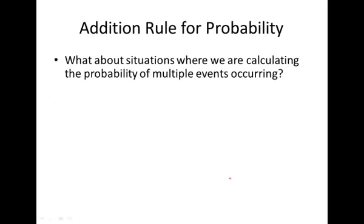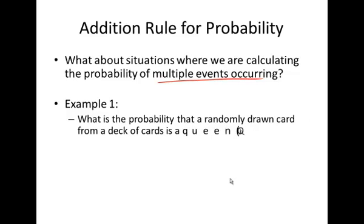The addition rule for probability. What about situations where we are calculating the probability of multiple events occurring? Example 1: What is the probability that a randomly drawn card from a deck of cards is a queen or a 9? Can these things happen at the same time when you draw a single card? The answer is no. Because there are queens of spades, hearts, diamonds, and clubs, and there are 9s of spades, hearts, diamonds, and clubs. But you can't get a card that's a queen and a 9 at the same time. So we call that disjoint.